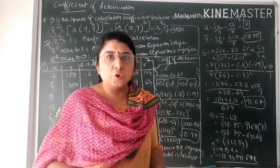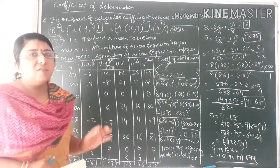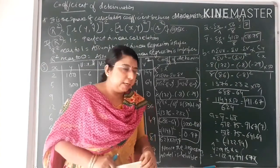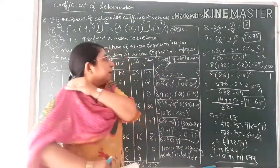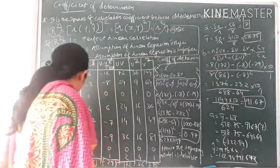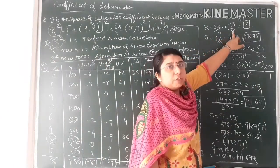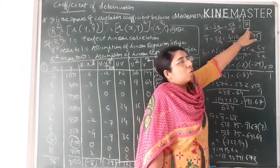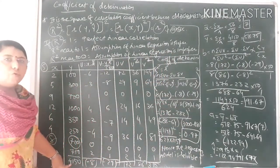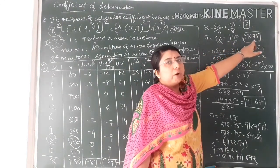Let us start with the practical solution. The first step is to find X̄ and Ȳ. X̄ = ΣX/N = 56/8 = 7. Ȳ = ΣY/N = 4150/8 = 518.75. Since Ȳ is coming in decimal, we will apply the UV formula — the shortcut method — instead of the XY formula.